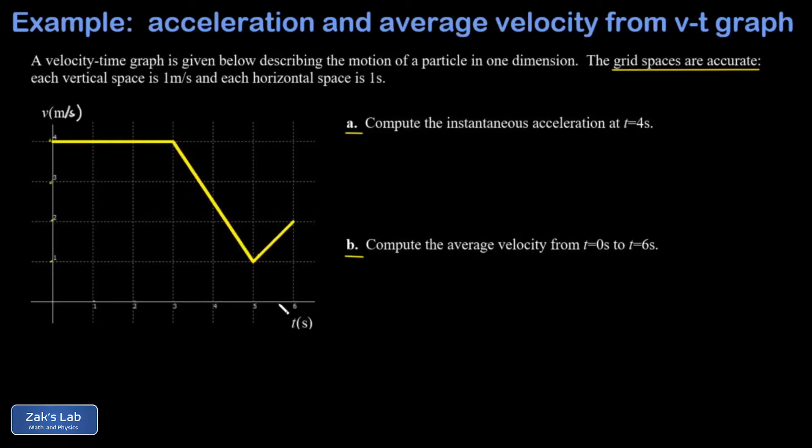Now to get the instantaneous acceleration at t equals four, I go to that point on the graph. When t is four I'm right here and v looks like it's about two and a half.